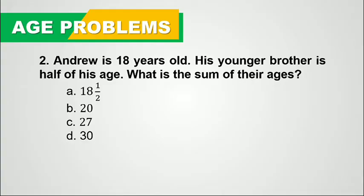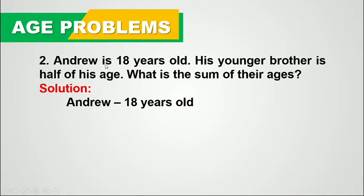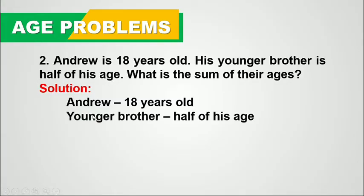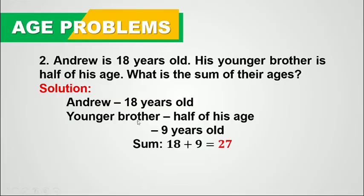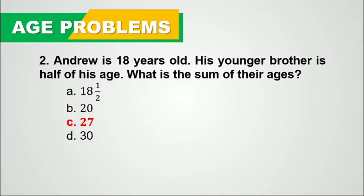In answering this, similar to what we did earlier, we translate each given statement into a mathematical expression. Andrew is 18 years old — that's already given. His younger brother is half of his age, so half of 18 is 9. The younger brother of Andrew is 9 years old. The sum of their ages is 18 plus 9, which is 27. So the correct answer is letter C.